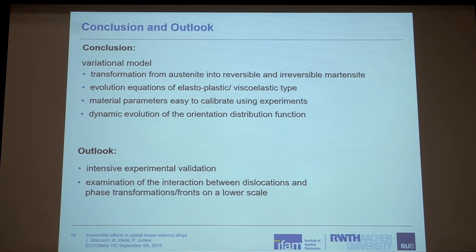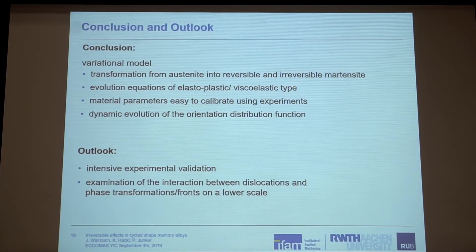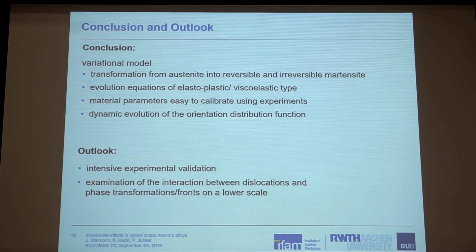Let me finally conclude my talk. I showed you a variational material model which is able to capture the effect of functional fatigue by coupling a reversible and an irreversible transformation. We had evolution equations of elastoplastic type for the phase transformations and of viscoelastic type for the Euler angles. The parameters used are all calibrated to experiments, and I used a dynamic evolution of the orientation distribution function instead of calculating the phase transformation for every grain. In the future, we need more intensive validation of our simulations. We are also working with Aaron Steppner from the US to validate our approach for the polycrystal, and we plan in Aachen to examine the interactions of dislocations with phase boundaries directly on a lower scale.